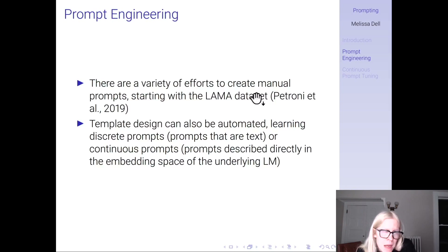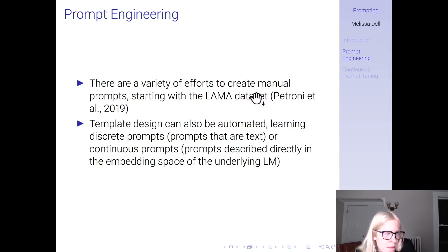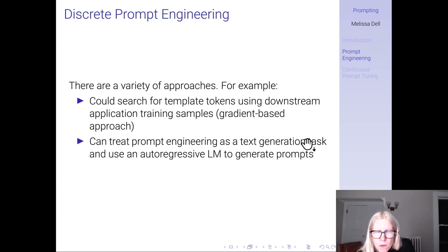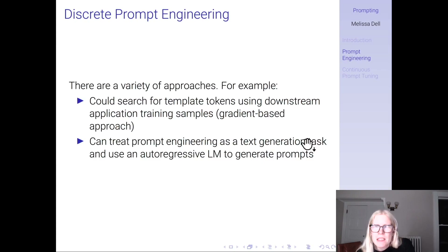There have been a variety of efforts to create manual prompts, starting with the LAMA dataset in 2019. You can go to ChatGPT and see a list of prompts they suggest for interacting with it. The template design can also be automated — learning discrete prompts, meaning prompts that are text, or continuous prompts, which are prompts described directly in the embedding space of the underlying language model. Increasingly, prompt engineering is treated as a text generation task itself, using an autoregressive language model like GPT to generate prompts for you.